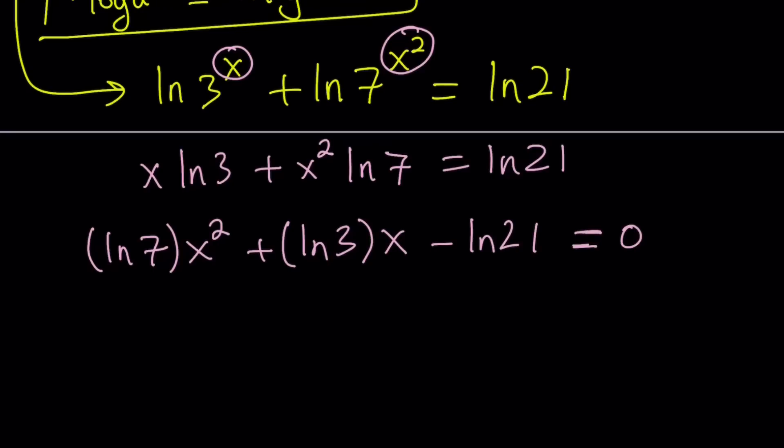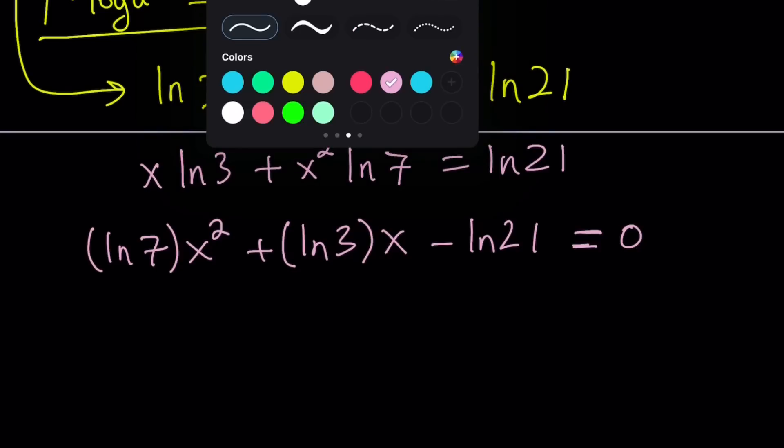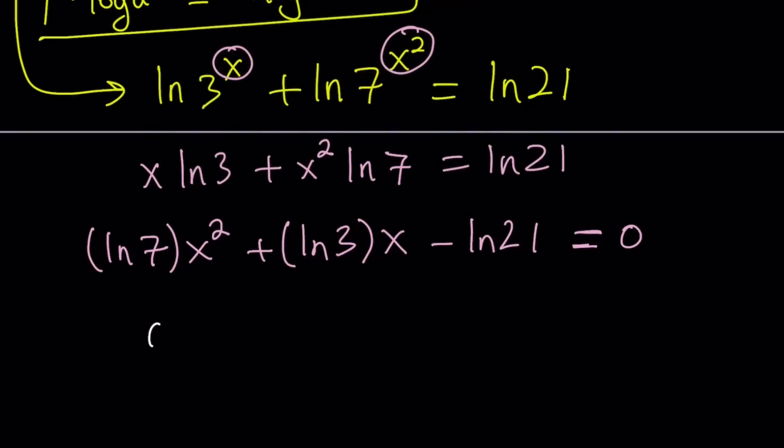Now, if you kind of think about what the general quadratic equation looks like: AX squared plus BX plus C equals 0. And we do have a formula for it, which we're going to talk about. So here, this is going to be A. This is going to be B. And with the negative sign, this is going to be our constant C.